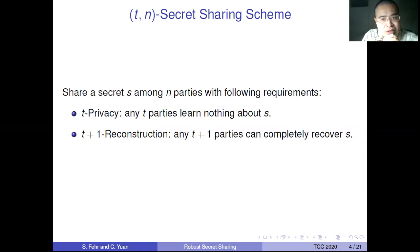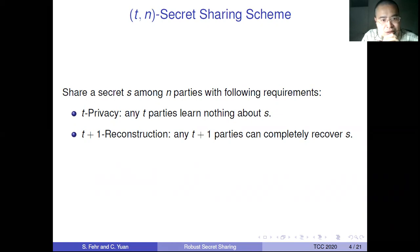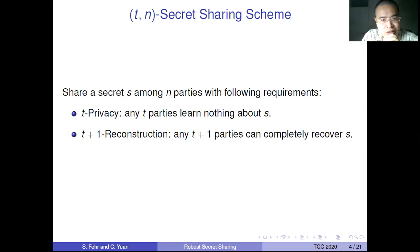What is this T,N secret sharing scheme? We have a secret S. We want to share it among N parties. There are two parameters we are interested in. First is privacy — we call it T-privacy — if any T parties learn nothing about S. And T-plus-one reconstruction: if any T-plus-one parties can completely recover S. There are the famous Shamir secret sharing schemes that realize this T,N secret sharing scheme.